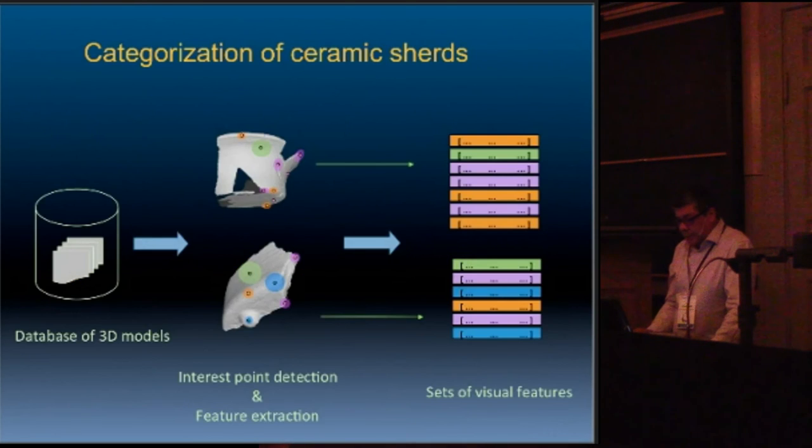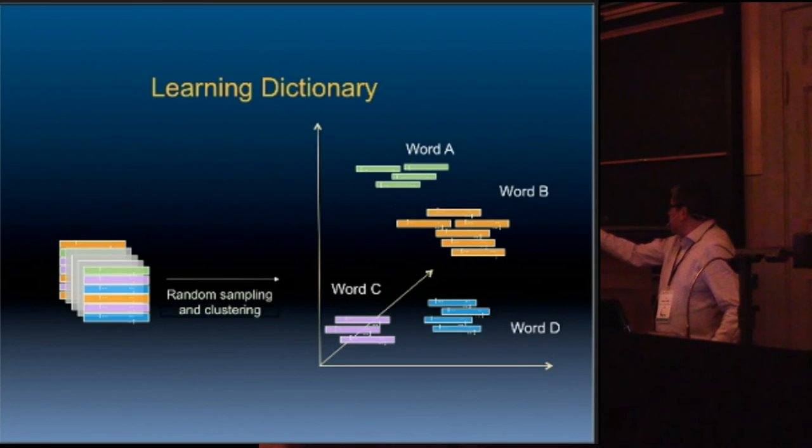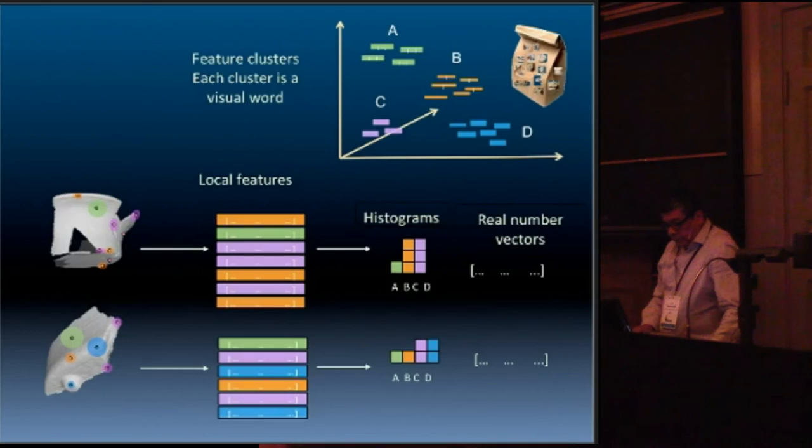These are our experiments with shards. Again, graphically you can see here the database. Then we have these features around the shards. We extract the descriptors. Then those descriptors are clustered to learn the dictionary, the most common for every model. And we create the histograms for each model, for each shard.